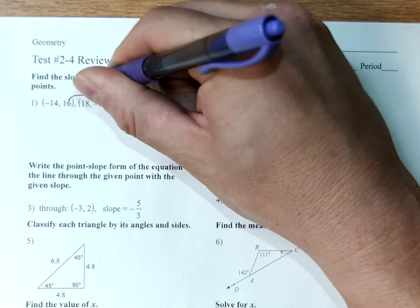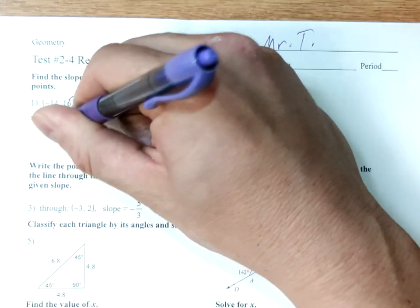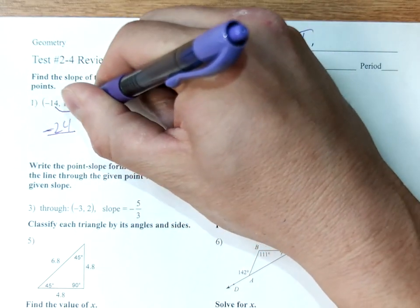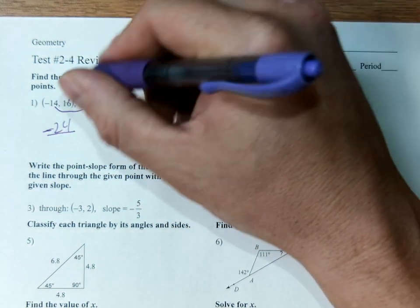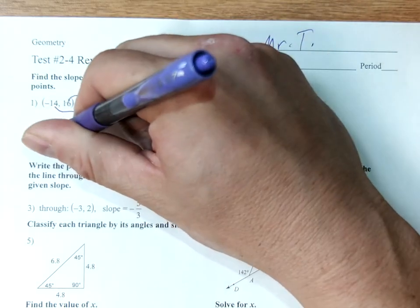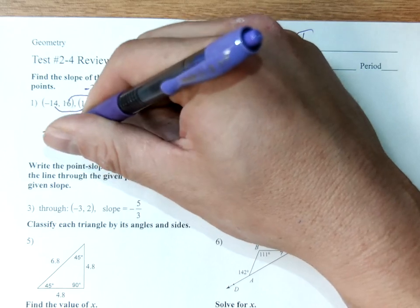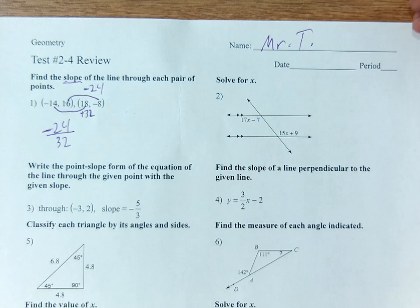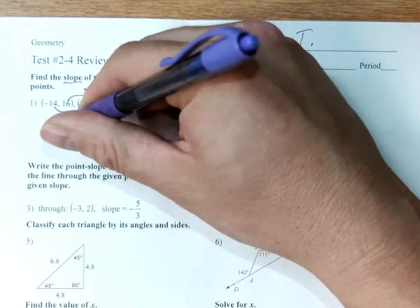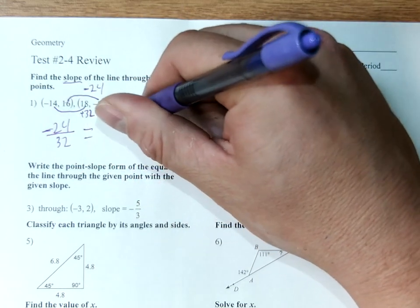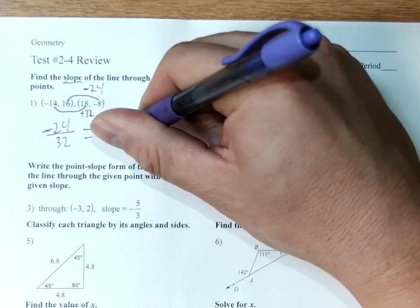These are 24 apart. It's decreasing by 24. That's the change in y. The x value here, negative 14 to 18, that's increasing by 32. That's the change in x. So this is divided instead of squared and added like the distance formula.